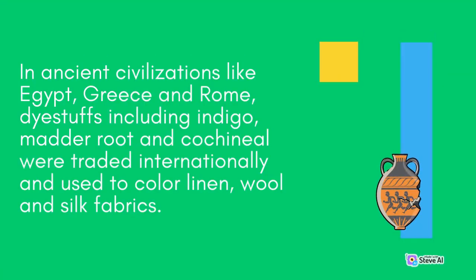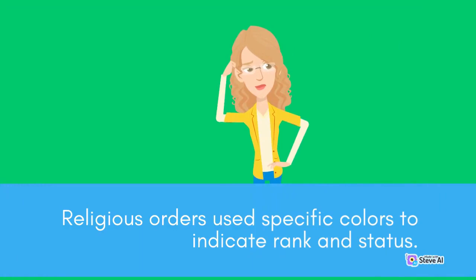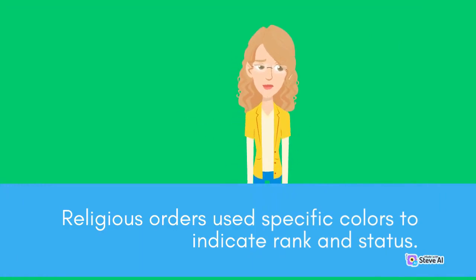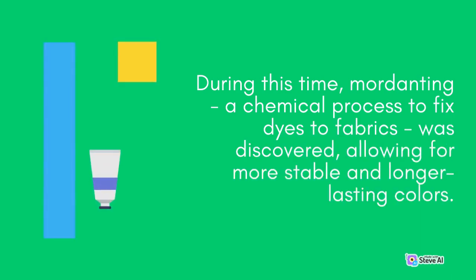In ancient civilizations like Egypt, Greece, and Rome, dyestuffs including indigo, madder root, and cochineal were traded internationally and used to color linen, wool, and silk fabrics. Colors held symbolic meanings, with purple representing royalty and scarlet representing godhood. Religious orders used specific colors to indicate rank and status. Dyers formed guilds to protect trade secrets and ensure quality. During this time, mordanting — a chemical process to fix dyes to fabrics — was discovered, allowing for more stable and longer-lasting colors.